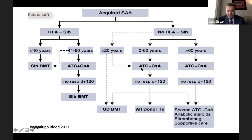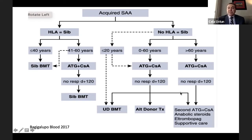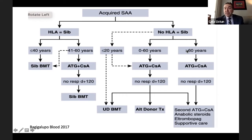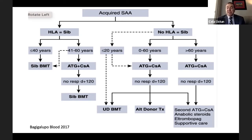If the patient is less than 20 years old without a sibling but has an unrelated donor, the decision requires good discussion. If the patient is 40 to 60 years old without a sibling, they should receive ATG and cyclosporine. If there is no response, they should get transplantation. For patients 60 and older, they should get immunosuppressive therapy; if they don't respond, perhaps a second course, and if still no response, transplantation depending on fitness.